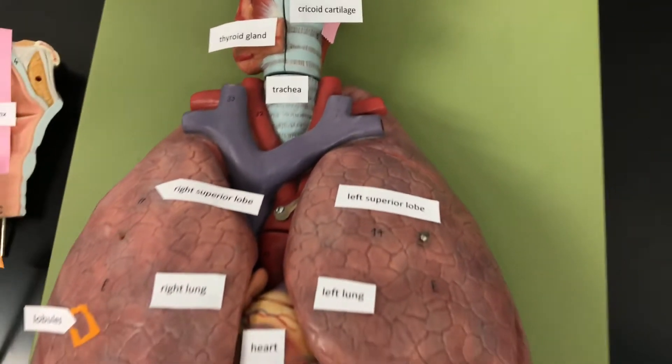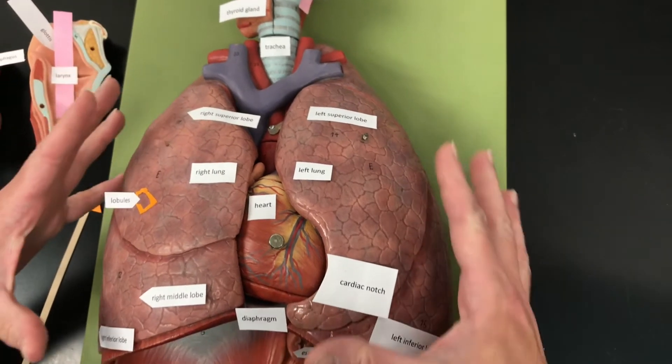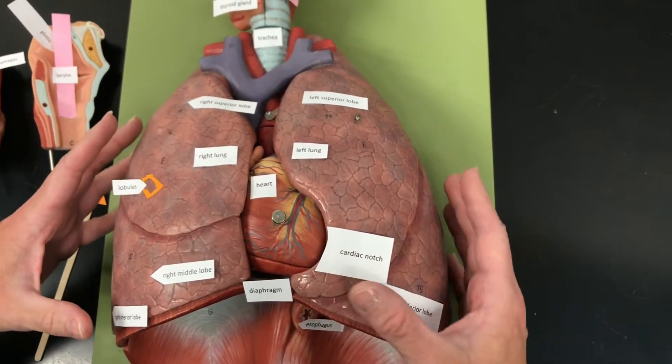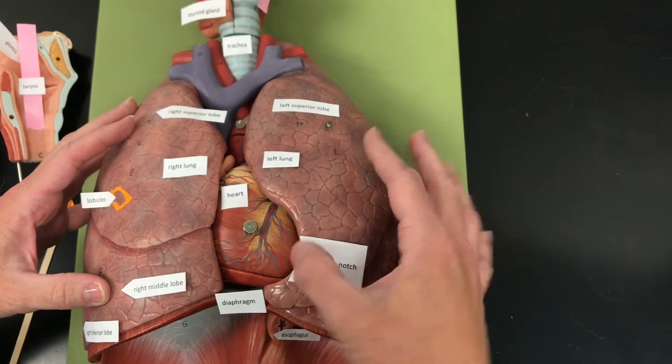So inferior to the cervical region, we have the thoracic cavity. In the thoracic cavity, we have two lungs and the heart.